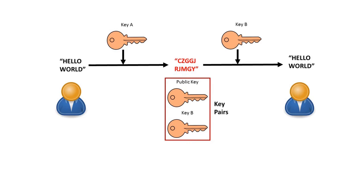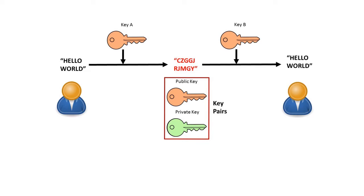For asymmetric encryption to work, we have to pick either one of these keys from the key pair and make it our public key. The other becomes what is known as the private key. The public key, as its name suggests, is public — you can give it out, publish it online, and quite often they are stored online in the cloud in secure servers known as key servers. Anyone can get access to your public key. The other key, your private key, is absolutely secret — you never send it to anyone.